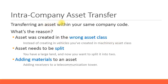In that case, you need to keep the asset but do an internal transfer to the correct asset class by creating an intra-company asset transfer. Another example is when an asset needs to be split — for example, you have a large piece of land and you want to divide it into two or three parts without selling or retiring it. In that case you also do an intra-company asset transfer transaction.